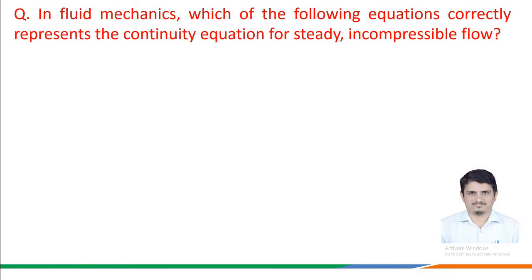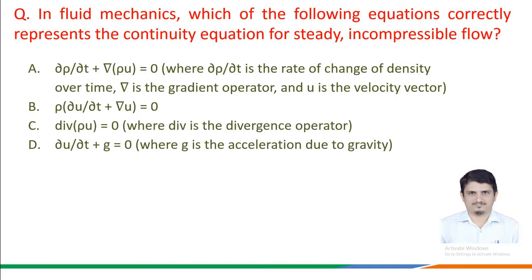Next question: in fluid mechanics, which of the following equations correctly represents the continuity equation for steady incompressible flow? The given options are: A. ∂ρ/∂t + ∇·(ρU) = 0, where ∂ρ/∂t is the rate of change of density over time, ∇ is the gradient operator, and U is the velocity vector. B. ρ(∂U/∂t + ∇U) = 0. C. ∇·(ρU) = 0. D. ∂U/∂t + g = 0, where g is the acceleration due to gravity.